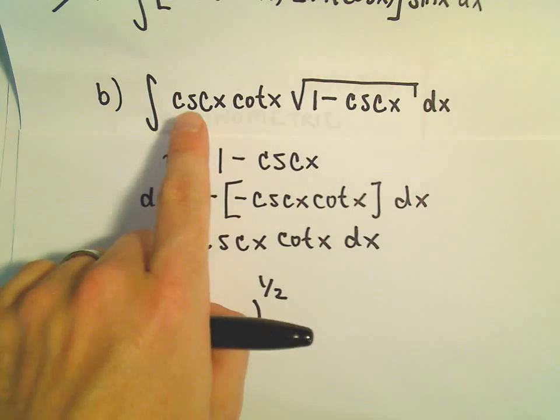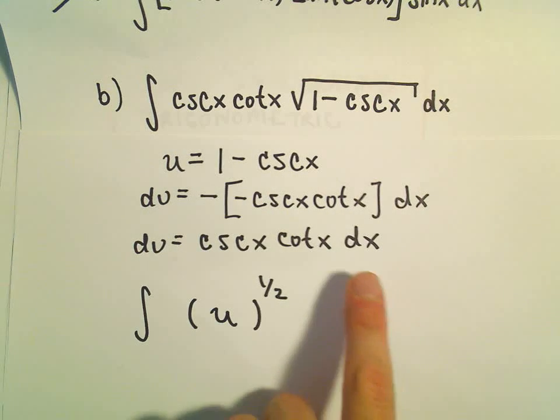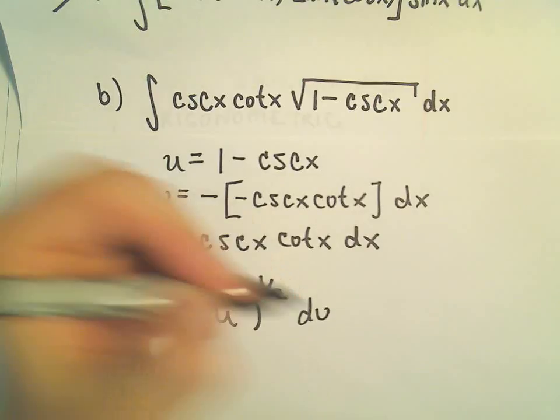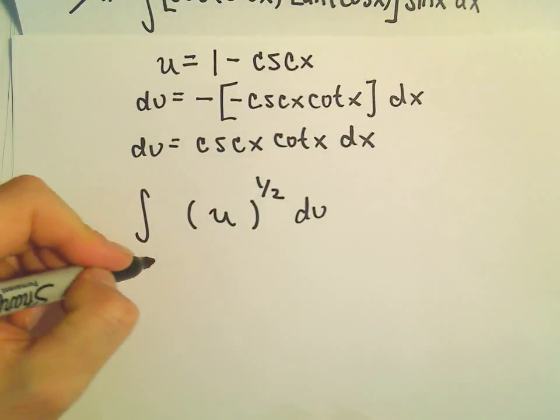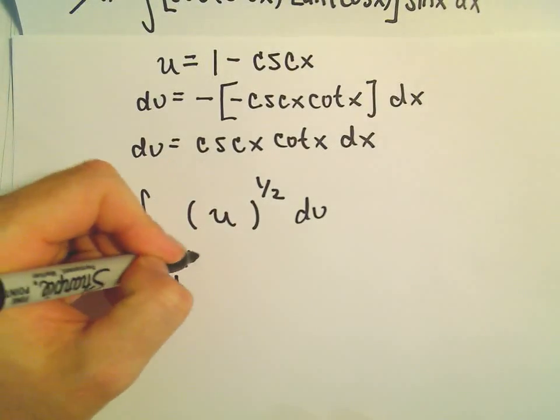And then we would still have to replace the cosecant cotangent dx, but all of that is just du. So really, we're just integrating u to the 1 half power du.